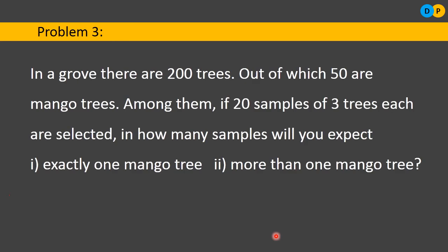Third problem: in a grove there are 200 trees, out of which 50 are mango trees. Among those 200 trees, if 20 samples of 3 trees each are selected — so we are drawing 20 samples, and in each sample there are 3 trees — we need to find in how many samples we would expect exactly one mango tree and more than one mango tree.